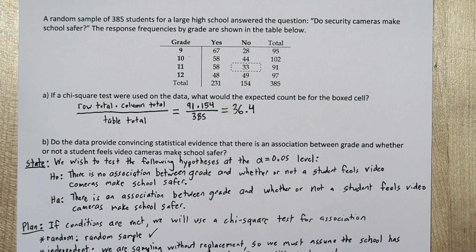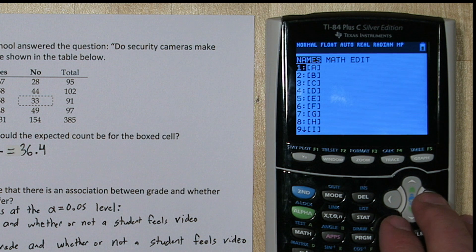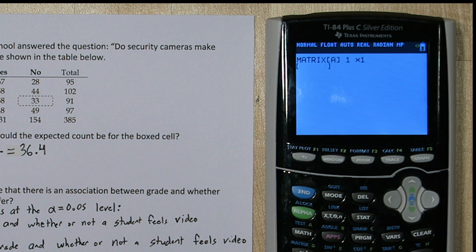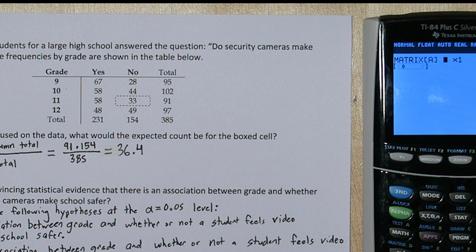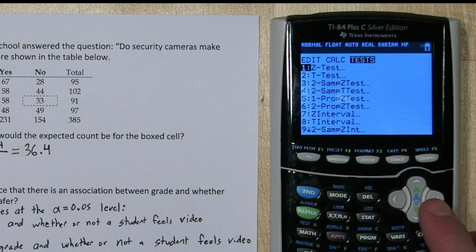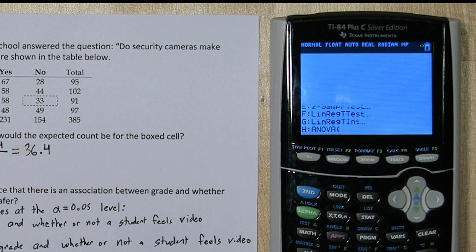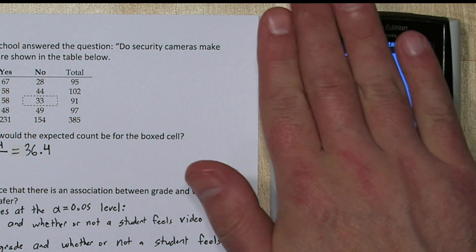I'm going to show you a trick using the calculator. Press 2nd and the x to the negative one power button to get to the matrix menu. Go to edit and press enter on matrix A to define it. The interior of our table excluding the totals is four rows by two columns, so we want a four by two matrix. Input the data, then press 2nd quit. Push the stat button, go over to tests, and scroll down to option C, which is chi-square test. Matrix A is already set as the observed data, and we'll store expected cell counts in matrix B. Press calculate.